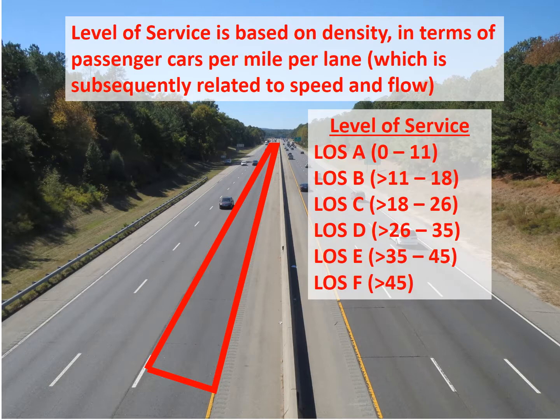The Highway Capacity Manual gives us the thresholds for level of service for freeways. Level of service A is anything up to 11 passenger cars per mile per lane — a completely free-flowing condition where operating speeds are efficient and drivers can choose their own speed and lane. Level of service B is greater than 11 and up to 18 passenger cars per mile per lane, representing stable flow.